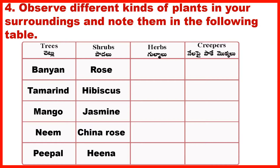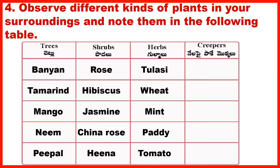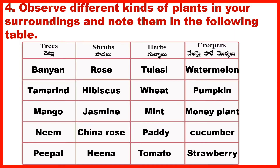Herbs: Tulsi, Wheat, Mint, Paddy, Tomato. Creepers: Watermelon, Pumpkin, Money Plant, Cucumber, Strawberry.